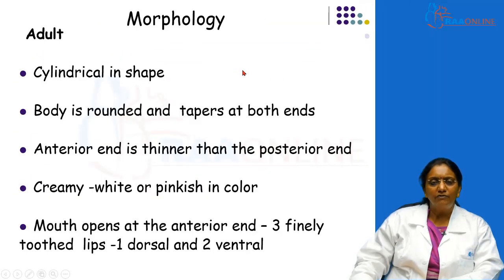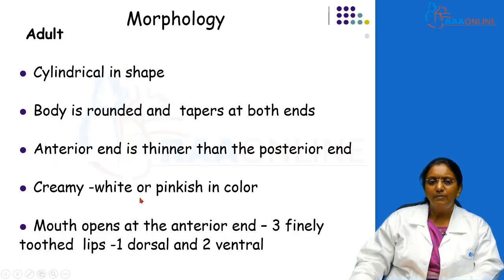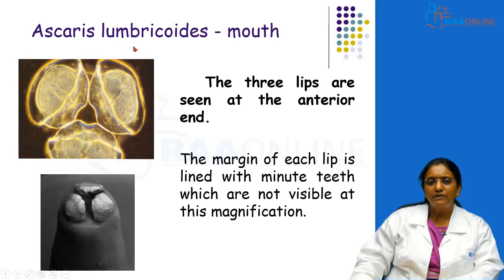Regarding the morphology of the adult worms, the common features for both: as already shown in the picture, they are cylindrical in shape, the body of the worm is rounded but the two ends are tapering. The anterior end where the mouth is present is thinner than the posterior end, and the worm is creamy white or pinkish in colour. At the anterior end you have the mouth and it has three lips with very fine teeth. The position of the lips is that one is dorsal and two are ventral. This picture of the mouth end shows the dorsal and ventral lips, with minute teeth lining the margin, which are not visible at this magnification.